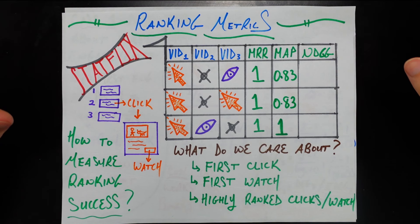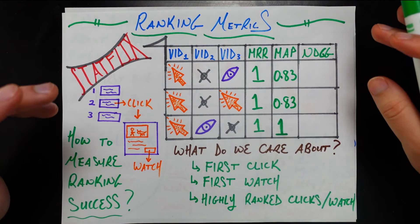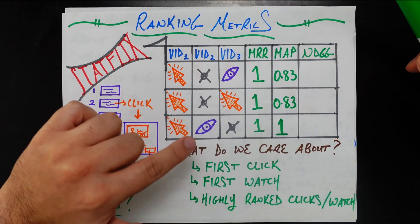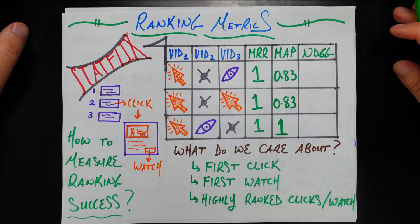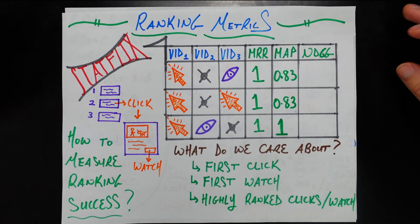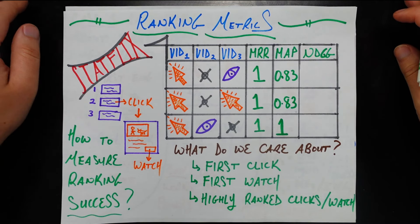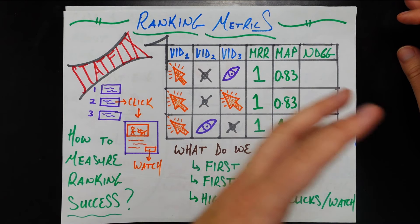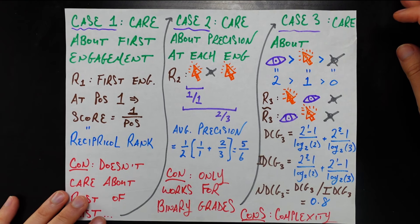Now let's get back to a downside of MAP — and for that matter, MRR as well — which is that both metrics only care about binary grades. They don't distinguish whether you're looking at a click or a watch. But as the data scientist for Statflix, you might actually put more weight on a watch than a click. A click means 'I'm kind of interested in this TV show, let me read the description.' But a watch says 'I'm going to commit some portion of my life to actually try watching this show,' which goes a much longer way toward the business use case. Neither of these metrics can take that into account because you have to first binarize the relevance — basically say this means not relevant, and this means relevant — with no room for different grades like zero, one, or two.